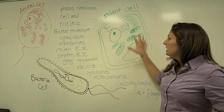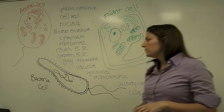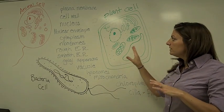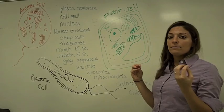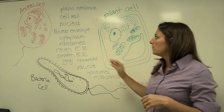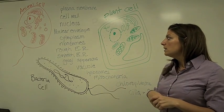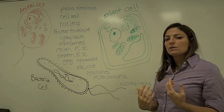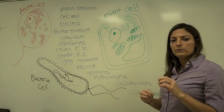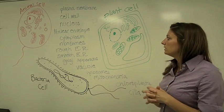The cytoplasm is the soup of the cell, and all three types of cells have that soup. It's technically everything except for the nucleus — so it's the other organelles too, the other cell parts. Everything besides the nucleus is the cytoplasm. Sometimes you'll also hear the word cytosol, and that's just the liquidy part of the soup, not the organelles. So that's a little distinction there.